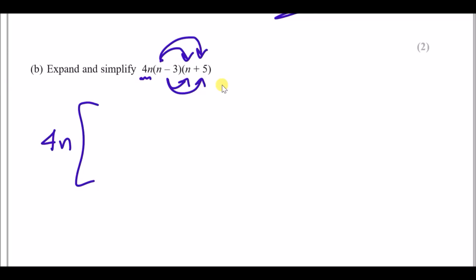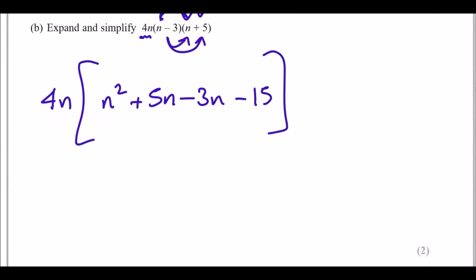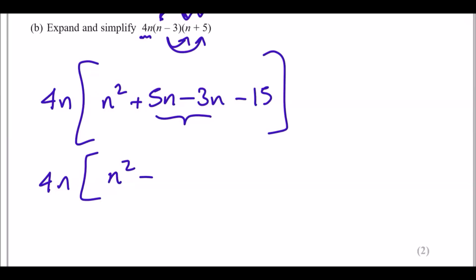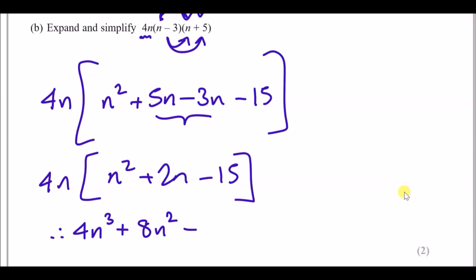So we've got n times n which is n², n times 5 which is +5n, then minus 3 times n which is -3n, and minus 3 times 5 which is -15. Now collect like terms before dealing with the 4n: we have n², the 5n and -3n combine to make +2n, then -15. Now multiply everything by 4n: 4n times n² is 4n³, 4n times 2n is 8n², and 4n times -15 is -60n.